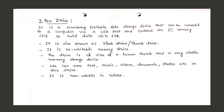A pen drive is a secondary portable data storage device that can be connected to a computer via a USB port and contains an IC (Integrated Circuit) memory chip to hold data up to 2 TB. It is also known as a flash drive or thumb drive. It is a rewritable memory device, approximately the size of a human thumb. We can save text, music, videos, documents, photos, etc. on it. It is non-volatile in nature, meaning data is not deleted when the computer is turned off.